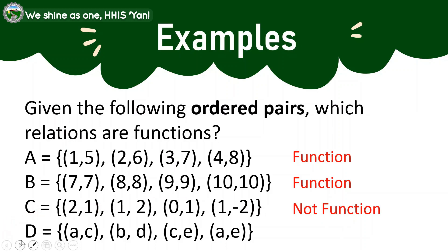Let us have now the set D: A,C, B,D, C,E, and A,E. So inspecting our first coordinates, we have in here A, B, C, and A. So there is an element in the domain which is repeated, which is the A, that is matched to C and E at the same time. Hence, the D is not a function.